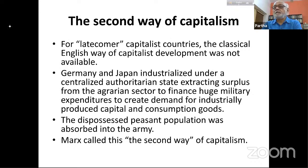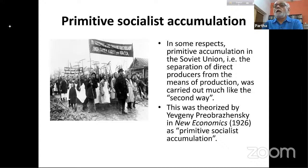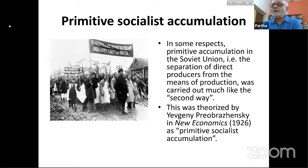Marx called this the 'second way' of capitalism in Volume 3 — late-comer capitalist countries for whom the classical methods of English capitalism were not available. In some respects, primitive accumulation in the Soviet Union — the separation of direct producers from means of production — was carried out much like the second way, with large armies and collective farms. Surplus from agriculture was extracted through collectivization, which took place in Stalin's period.